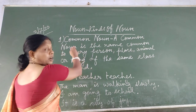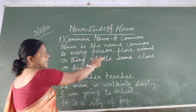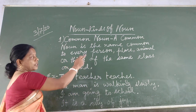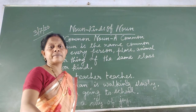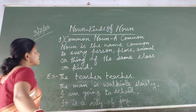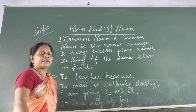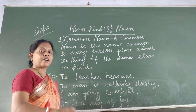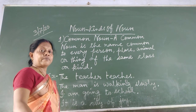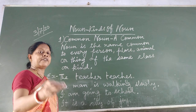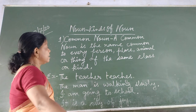What is a common noun? A common noun is the name common to every person, place, animal or thing of the same class or kind. As it is clear from the name 'common' — common means a name which is given in general to each and every person, place, animal or thing of the same class or kind.